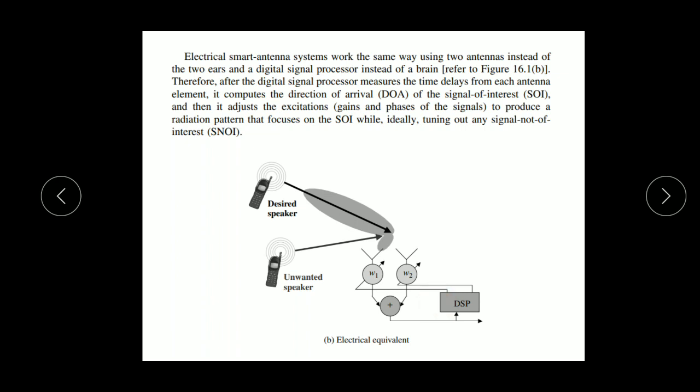After the digital signal processor measures the time delay from each antenna element, it computes the direction of arrival of the signal of interest. Then it adjusts the excitation. The DSP automatically adjusts parameters such as the gain and phase of the signal — they can be increased or decreased and the phase varied according to the direction of the user — to produce a radiation pattern that focuses on the signal of interest.